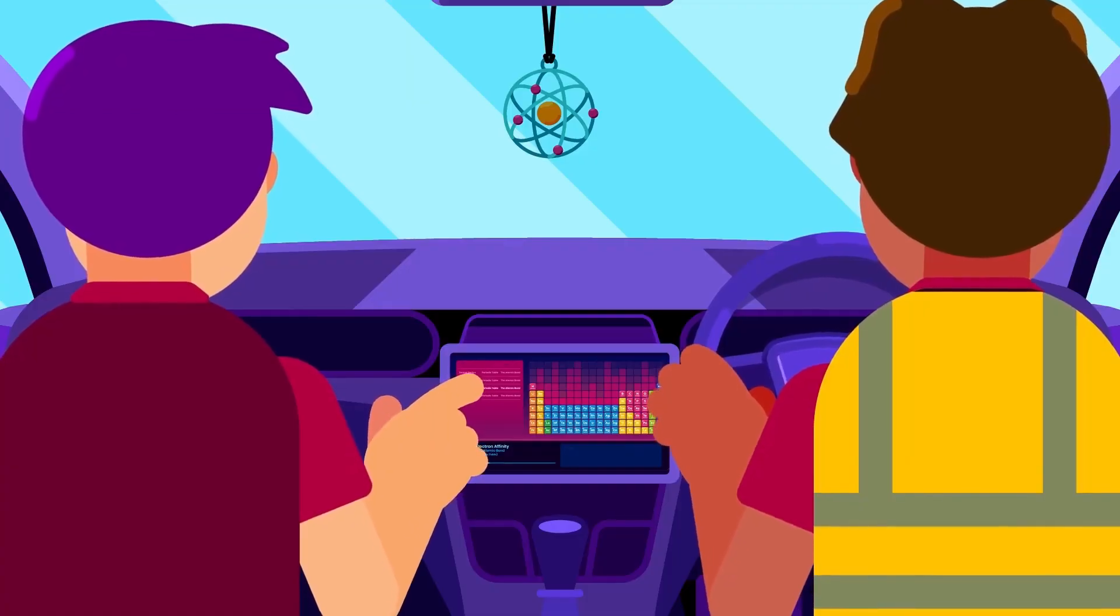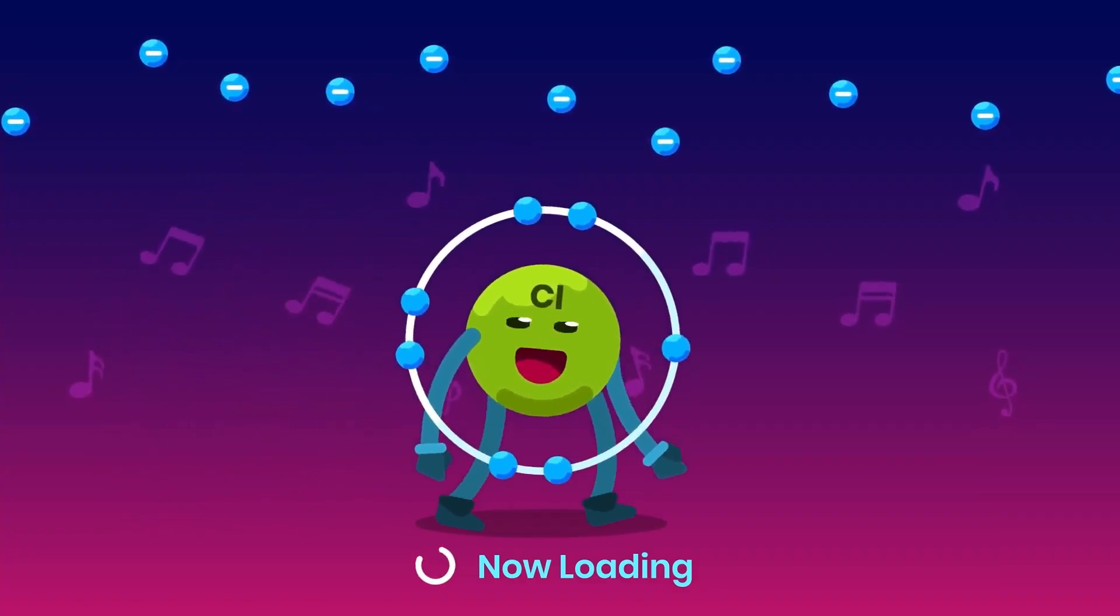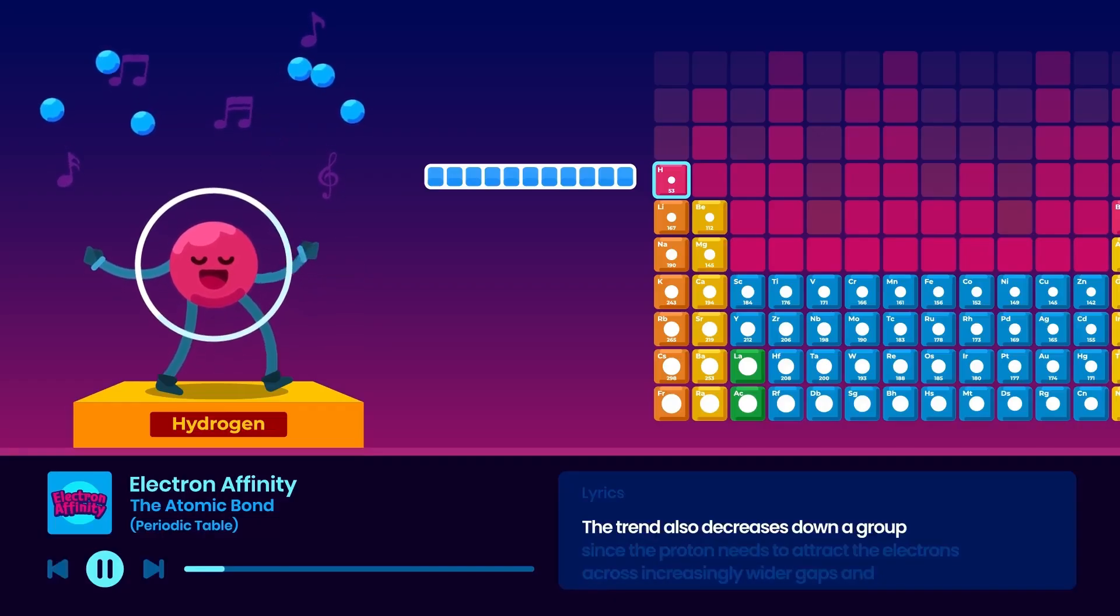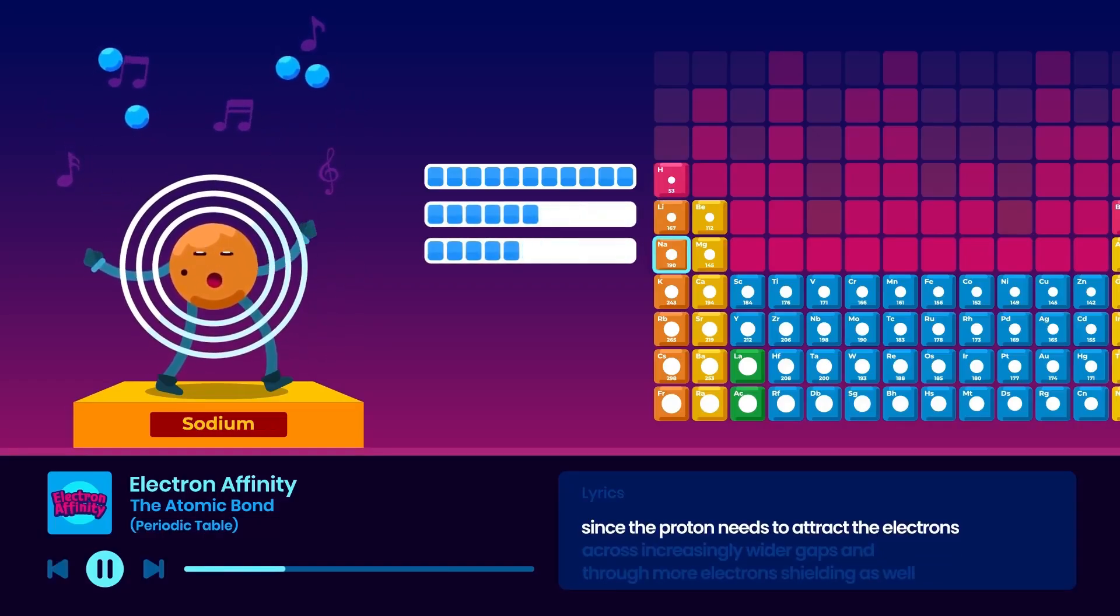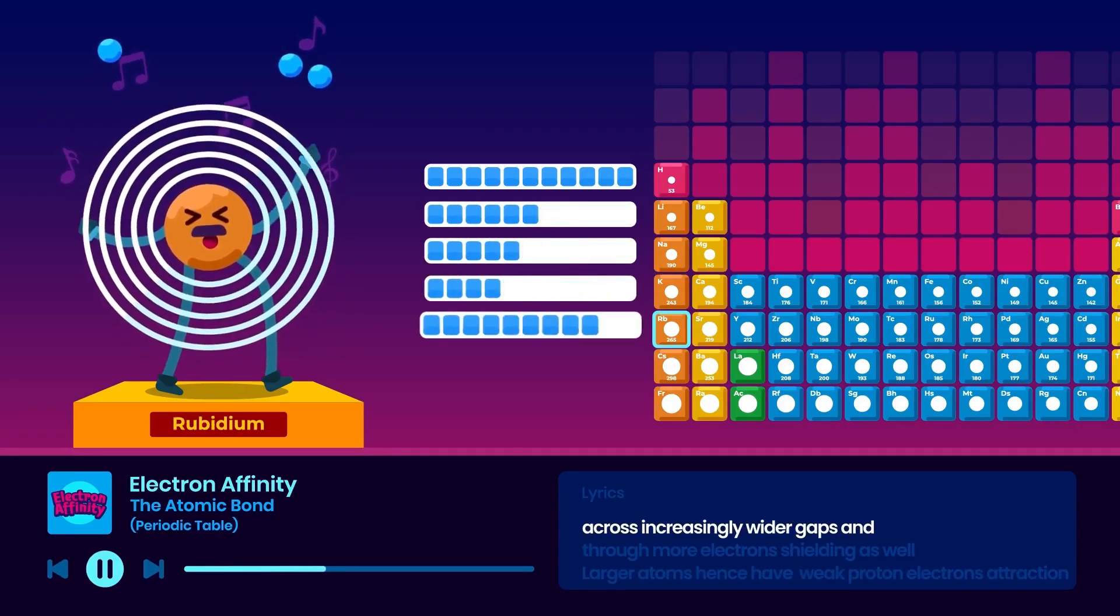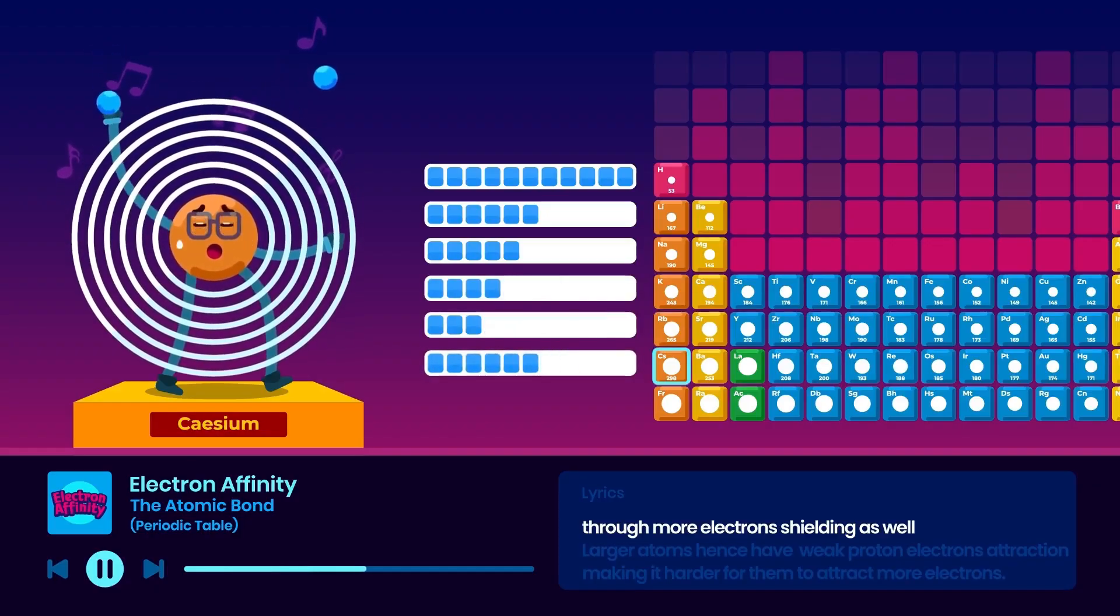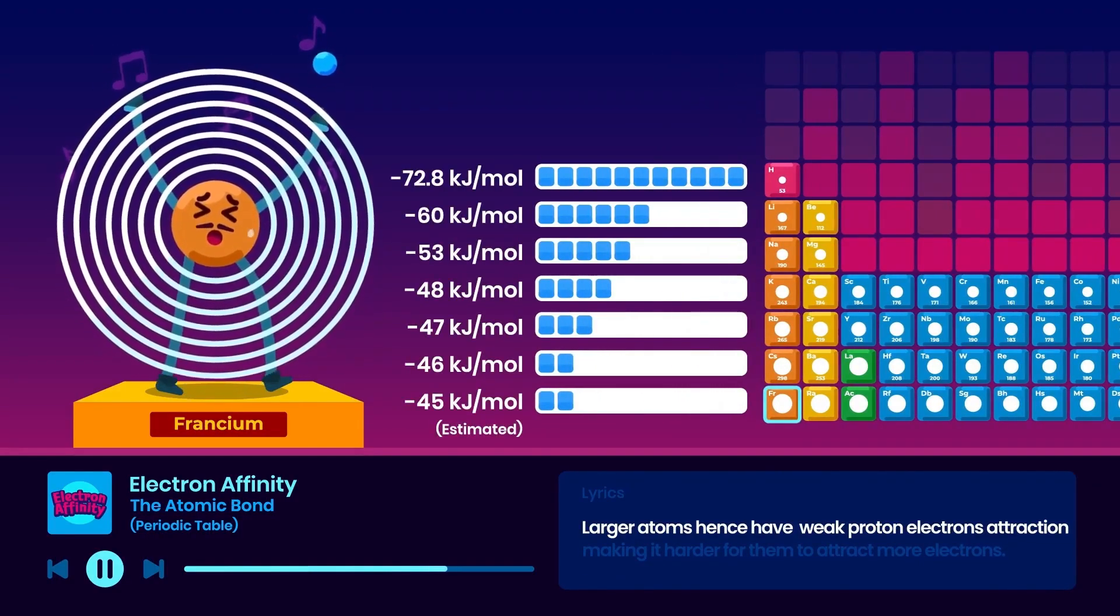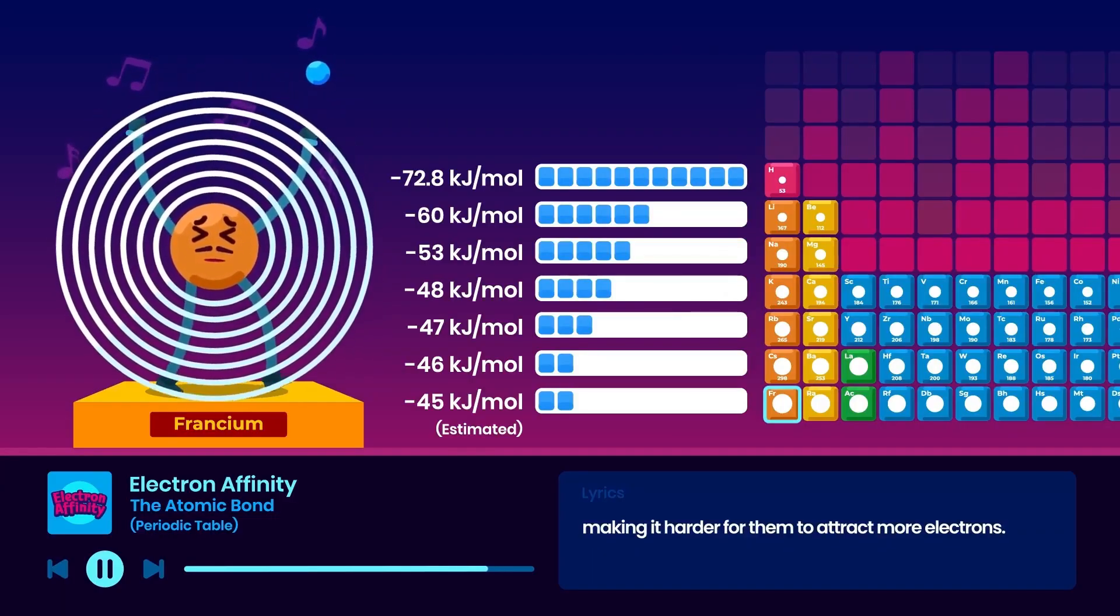Another crucial trend is electron affinity, which measures an atom's ability to attract electrons towards itself. The trend also decreases down a group, since the protons need to attract the electrons across increasingly wider gaps and through more electron shielding as well. Larger atoms hence have weaker proton-electron attraction, making it harder for them to attract more electrons.